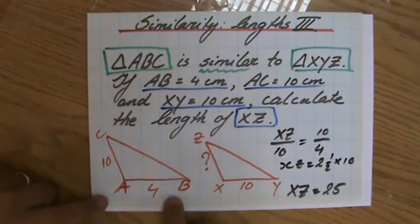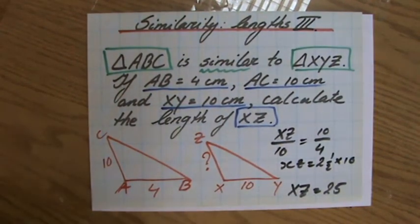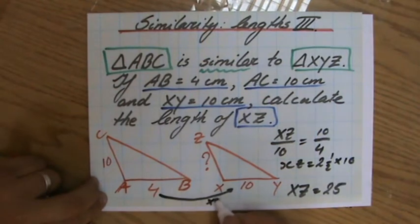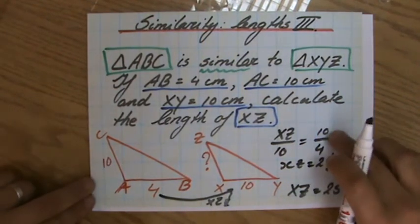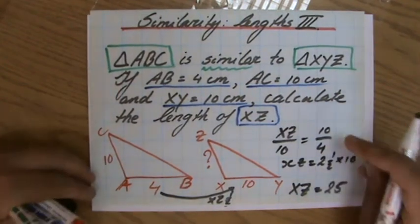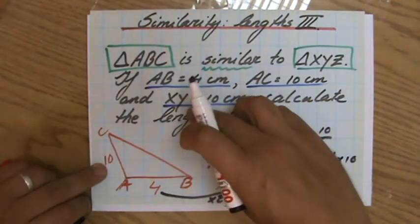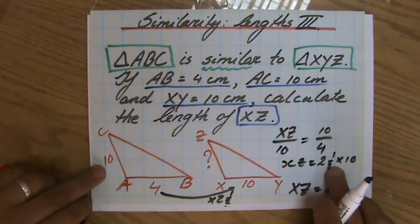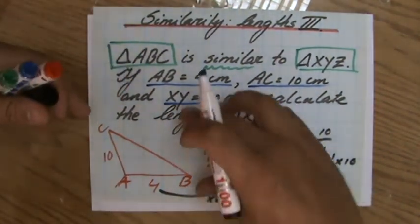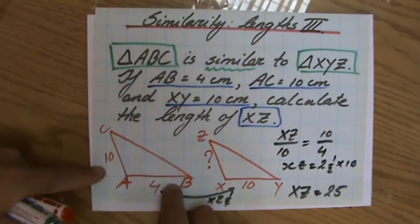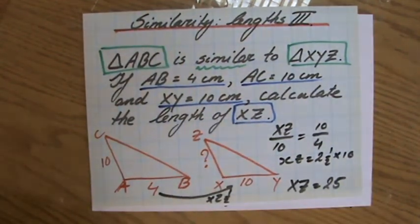A different way you could have approached it is to find the scale factor. The scale factor, 10 divided by 4, so that is 2 and a half times as big. That's basically what I've done now. I've found the scale factor, 10 divided by 4. And then you multiply this length by the scale factor, because this one is bigger. So 10 times 2 and a half, 10 times the scale factor, XZ is 25 units. Or if this would have said centimeters, it would have said 25 centimeters. Fantastic.